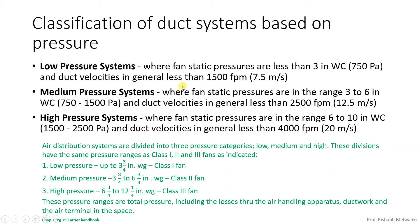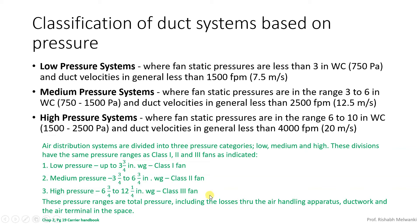One deviation is that the earlier classification used 3 inches of water column for static pressure, while the carrier handbook uses three quarters of an inch for total pressure in the low pressure system. This is because one classification is based on static pressure and the other on total pressure. Then we have fresh air duct classification.